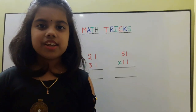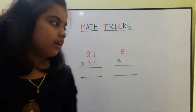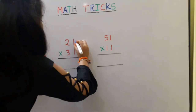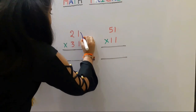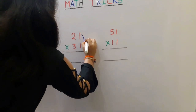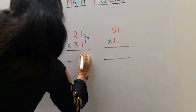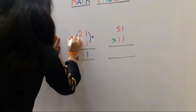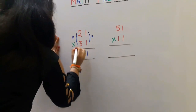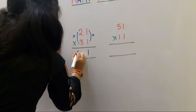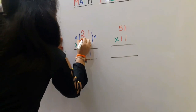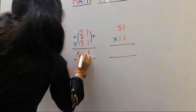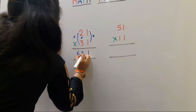Next trick in multiplication. First we should multiply the 1's place: 1 1's are 1. Next we should multiply the 10's place: 2 3's are 6. Next we should add the 10's place: 2 plus 3 is equal to 5.